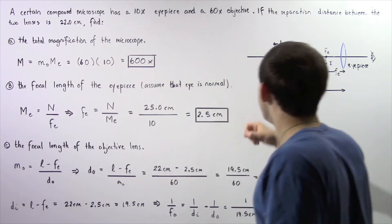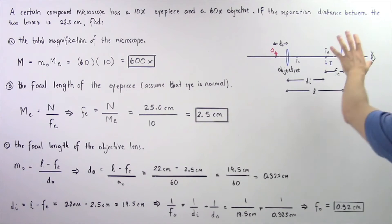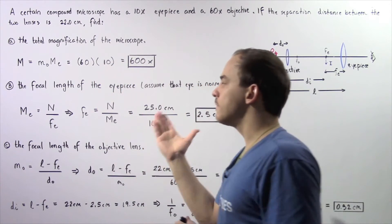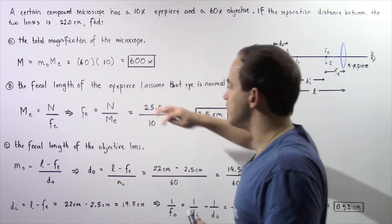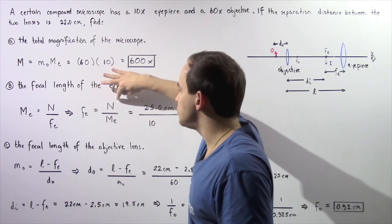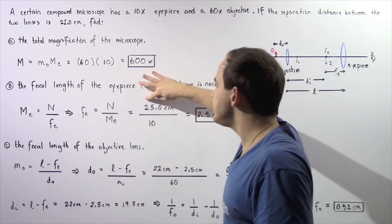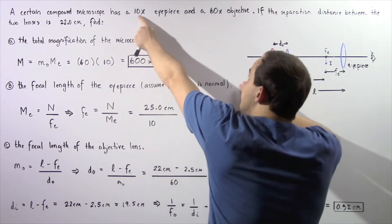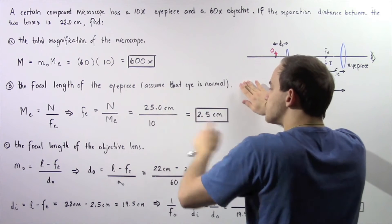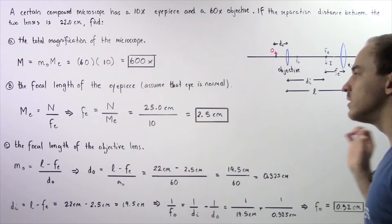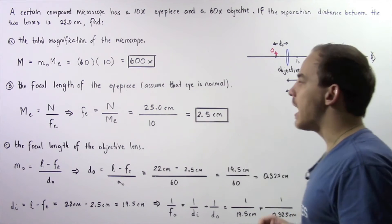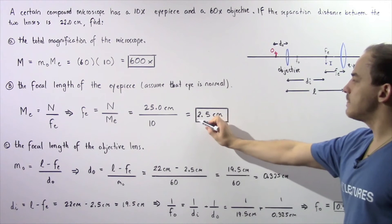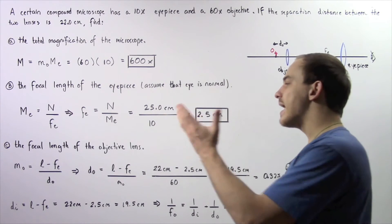We make the assumption that the second image produced by the eyepiece is found infinitely far away. Rearranging the equation, the focal length of the eyepiece equals N divided by ME. With N equal to 25 centimeters and ME equal to 10, we get 25 divided by 10, giving a focal length for the eyepiece of 2.5 centimeters.